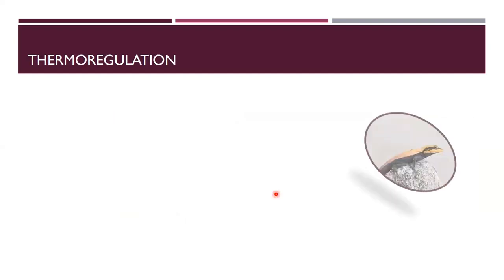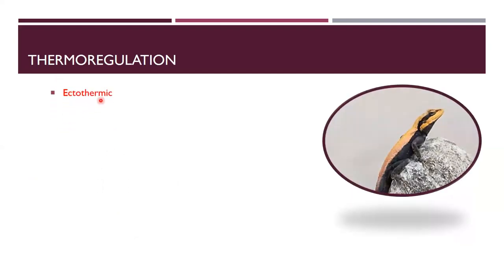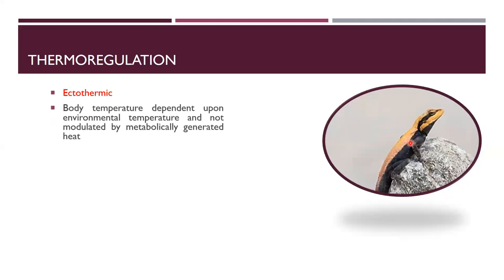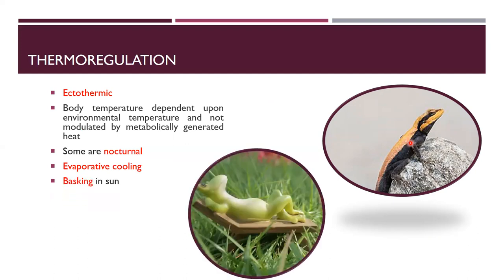Amphibians are ectothermic — ecto means outside and thermic means heat — they obtain heat from the external environment by conduction. They are not endothermic and cannot produce metabolic heat. Body temperature depends on environmental temperature. Some are nocturnal, performing feeding and reproductive activities at night. Some do evaporative cooling, and some bask in the sun to obtain heat for thermoregulation.